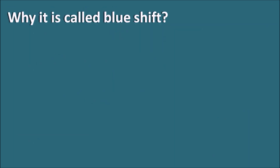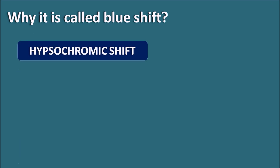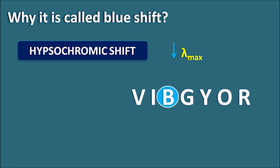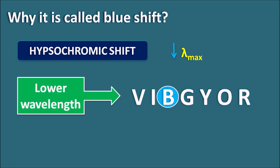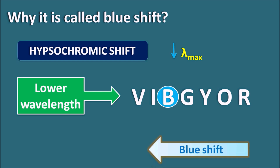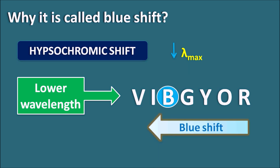Hypsochromic shift is called blue shift because it shifts lambda max to lower values. Referring again to VIBGYOR, the blue color is at shorter wavelengths. When travelling from red to blue, wavelength is reduced. That is why hypsochromic shift is called blue shift — the lambda max value is decreased.